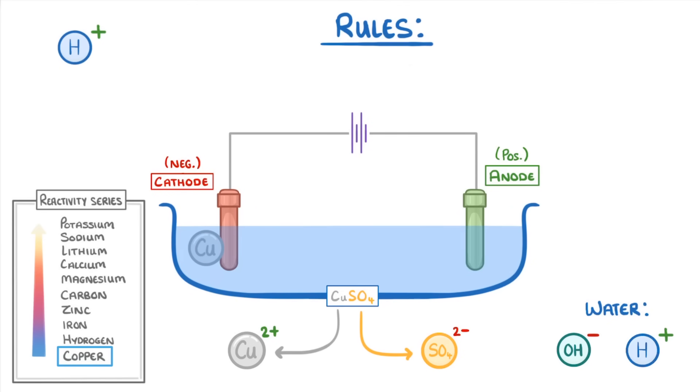And because all of this is done at normal temperatures, the copper will be solid, so it actually accumulates around the cathode.